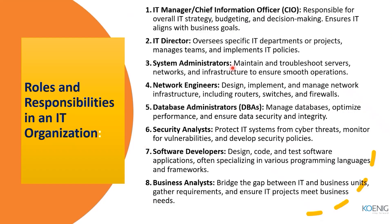Then we have the roles and responsibilities of the IT organization. We go through every person — like the IT Manager, or we can call it the Chief Information Officer, CIO — who is responsible for the overall IT strategy, managing the budget, making decisions, and ensuring IT aligns with the business goals. Then some companies have an IT Director as a second role, and some companies manage both things under IT management — overseeing specific IT departments or projects and implementing policies for that department.